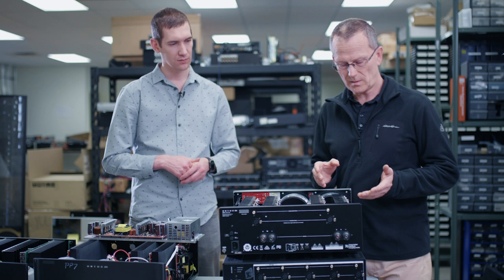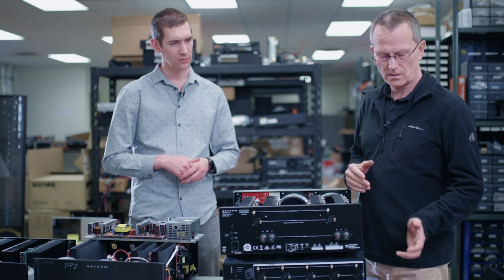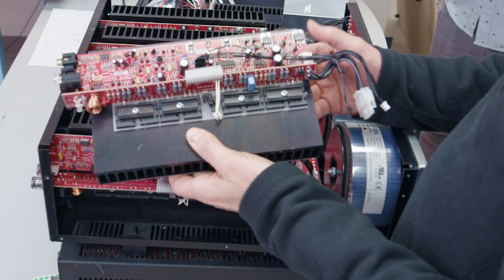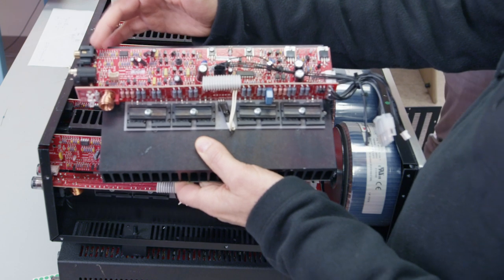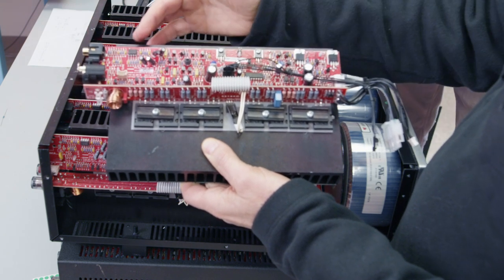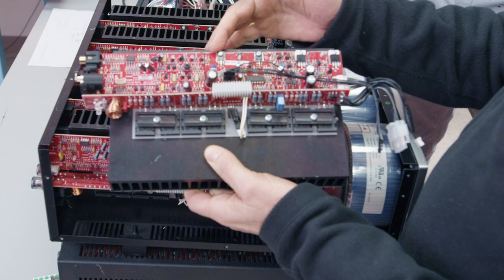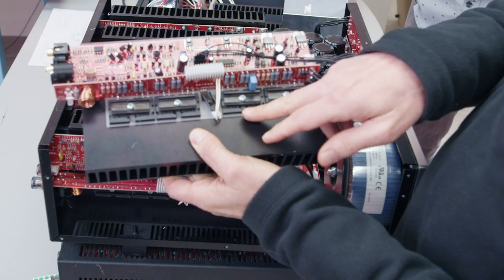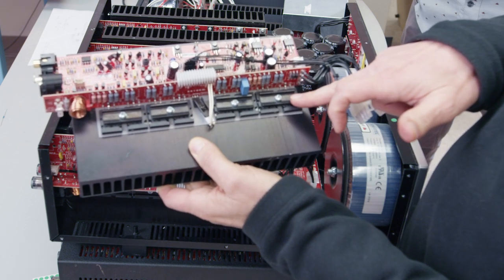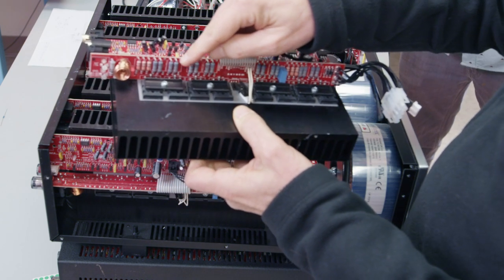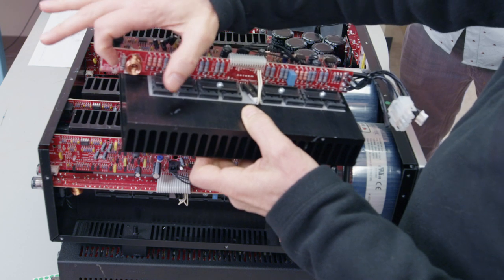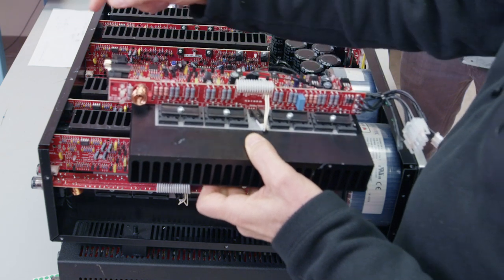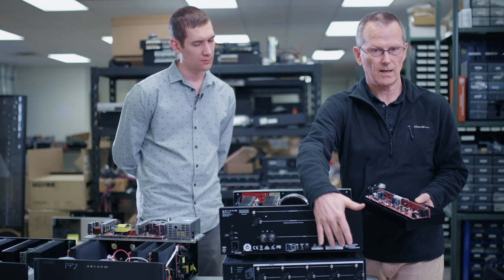And then we have the power amplifiers themselves and here's a module here. We have the input signal comes in here and then you have the input section, you have a voltage amplification section and then you have a buffer stage for the output devices and here we have eight output devices. And then finally the output appears here on these two terminals and that gets connected to the binding posts at the back.